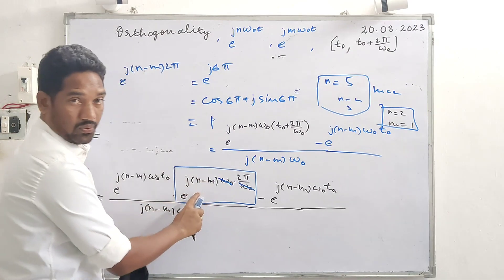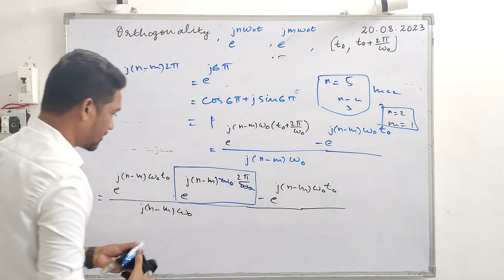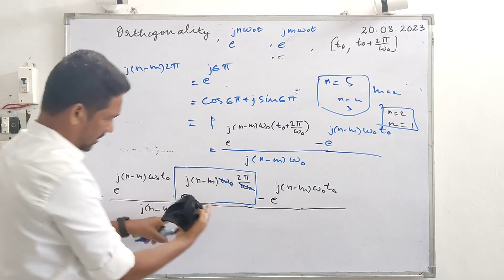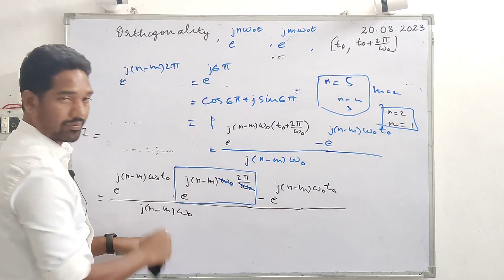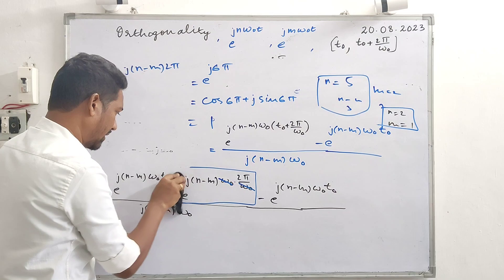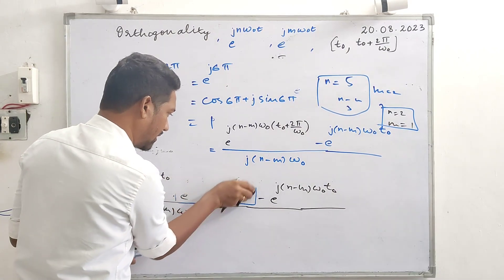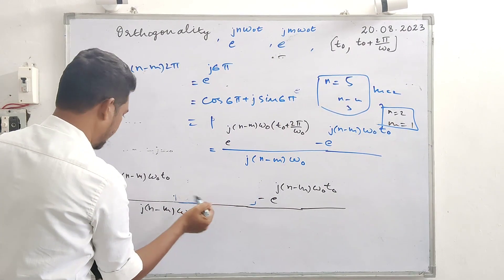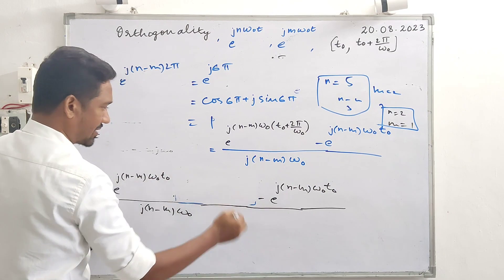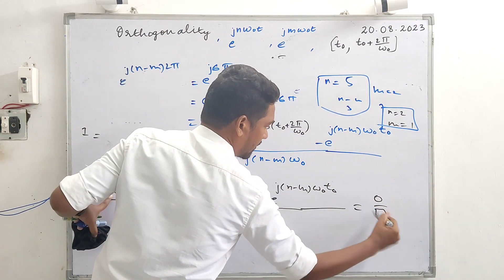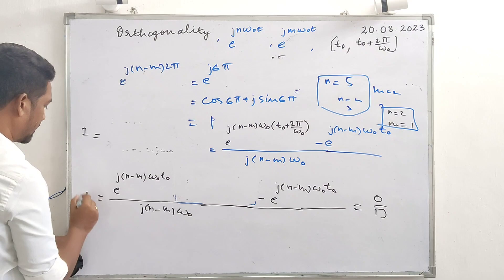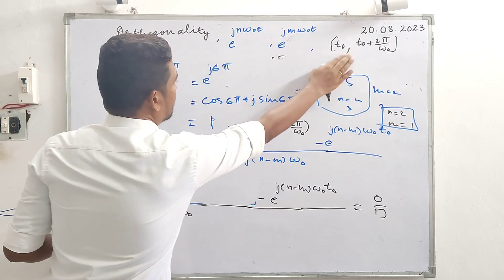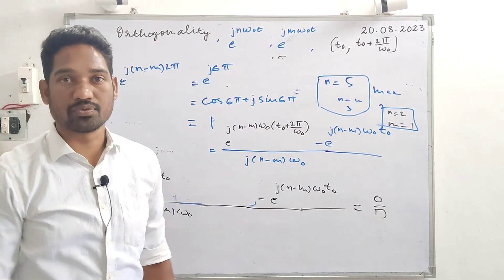This exponential for integer value of n minus m, n not equal to m - for different values of n and m combinations, this is 1. e rise to this one minus this one - they cancel, numerator will be 0 by denominator. So this integration is 0. This integration is 0, which means over this time interval they are orthogonal. That's it.